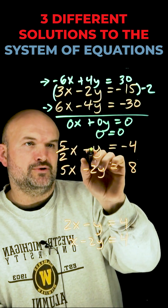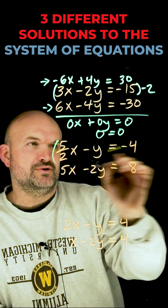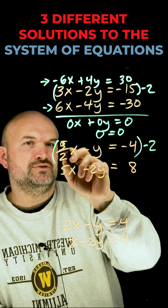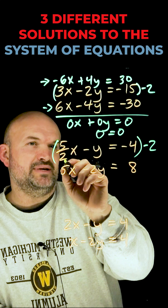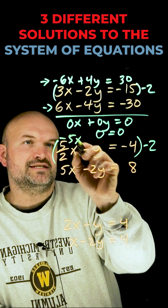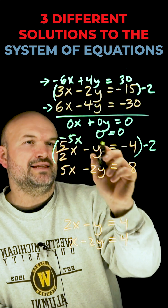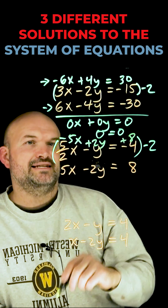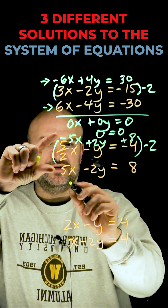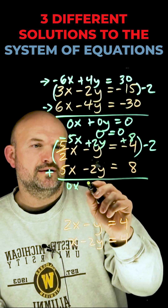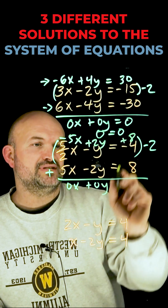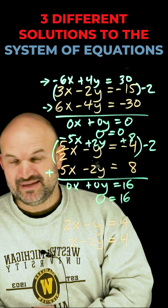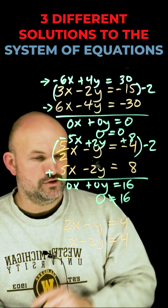For the next example, I'm going to multiply the top equation by negative 2 again. Multiplying: negative 2 times 5/2 gives me negative 5x; negative 2 times negative y gives me positive 2y; and this gives me positive 8. Adding the two equations together, I get 0x plus 0y, but 8 plus 8 equals 16. Since 0 equals 16 is never going to be true, this is an example of no solution.